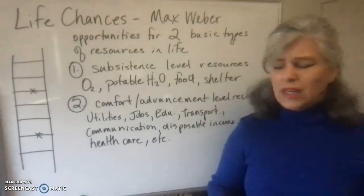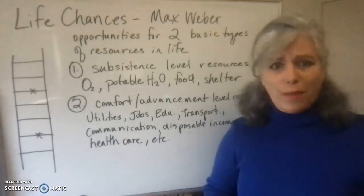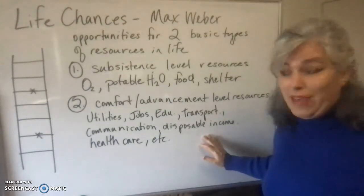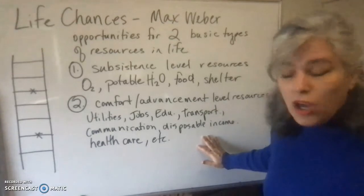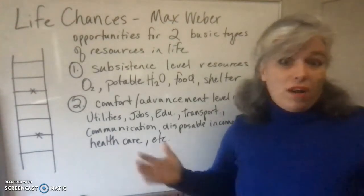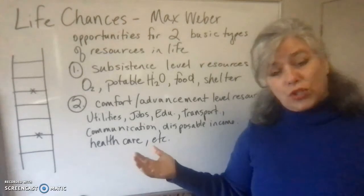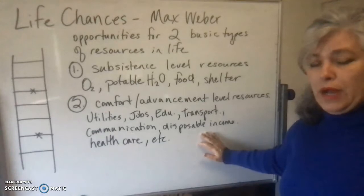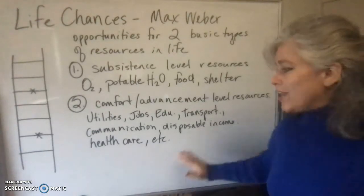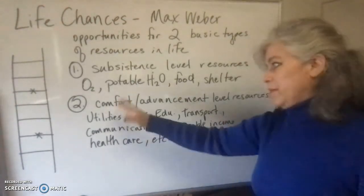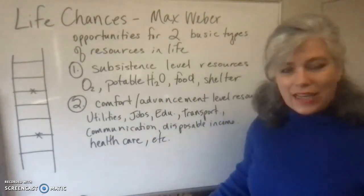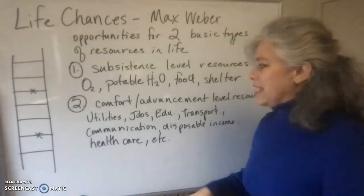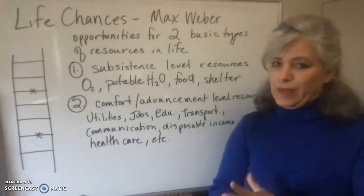Transportation opportunities, communication opportunities — here's your unlimited data plan. Disposable income: can we go to a movie? Can we afford Hulu and Netflix at the same time? Do we have a landline? Do we go on vacation? Do we go out to dinner sometimes instead of having to cook all the time? Disposable income in order to have some enjoyment in life. And also healthcare and other things — the list goes on. I just kept writing and writing, so I stuck an et cetera down there, because all of these things give us opportunities for comfort and advancement in life.